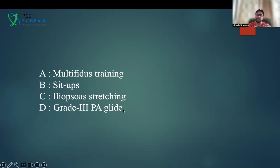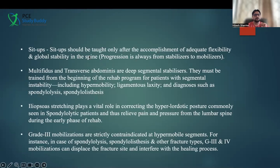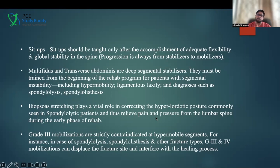Sometimes there are certain things which cannot be done — even those are mentioned as options. You always have to take care of precautions, contraindications, and patient safety. The reference explanation states: sit-ups should only be taught after accomplishment of adequate flexibility and global stability; multifidus and transversus abdominis are deep segmental stabilizers; iliopsoas stretching plays a vital role in correcting the hyperlordotic posture; and grade 3 remobilization is strictly contraindicated at a hypermobile segment. This is how different strategies help you rule out options and come to the right answer.